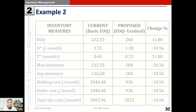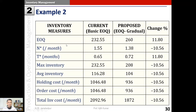Using these input values, the outputs are computed. The second column shows the current practice with basic EOQ; the third column shows the proposed gradual replenishment system; the fourth column shows the percentage change. The economic order quantity increases from approximately 232 to 260 units - roughly a 12% increase. As expected with gradual replenishment, we order larger quantities. The number of orders per year (n*) comes down from 1.55 to 1.38, reducing the ordering effort.